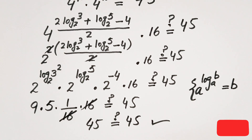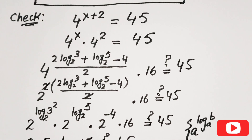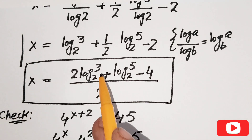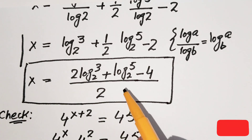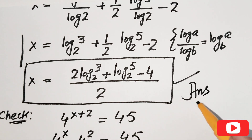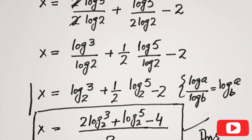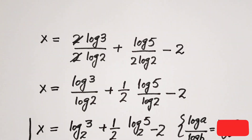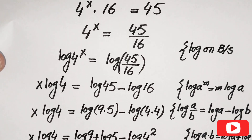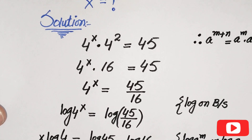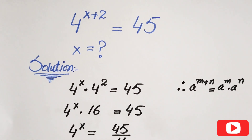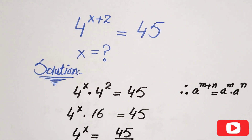Our left hand side equals right hand side, confirming that x equals 2 log 3 to base 2 plus log 5 to base 2 minus 4, all over 2. That is our final answer. Hope you have enjoyed this video. Don't forget to subscribe to my channel. Thanks for watching. Goodbye.